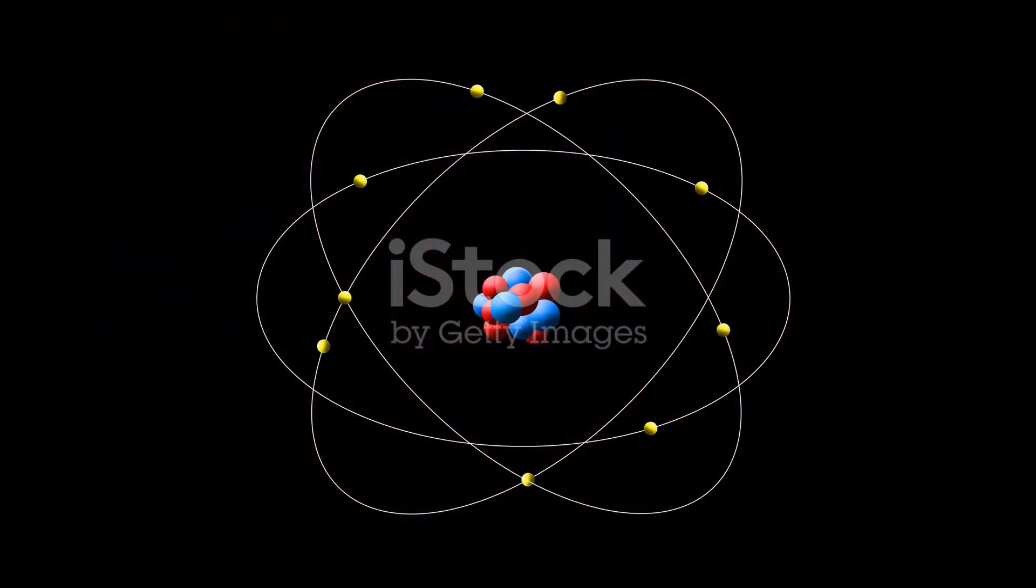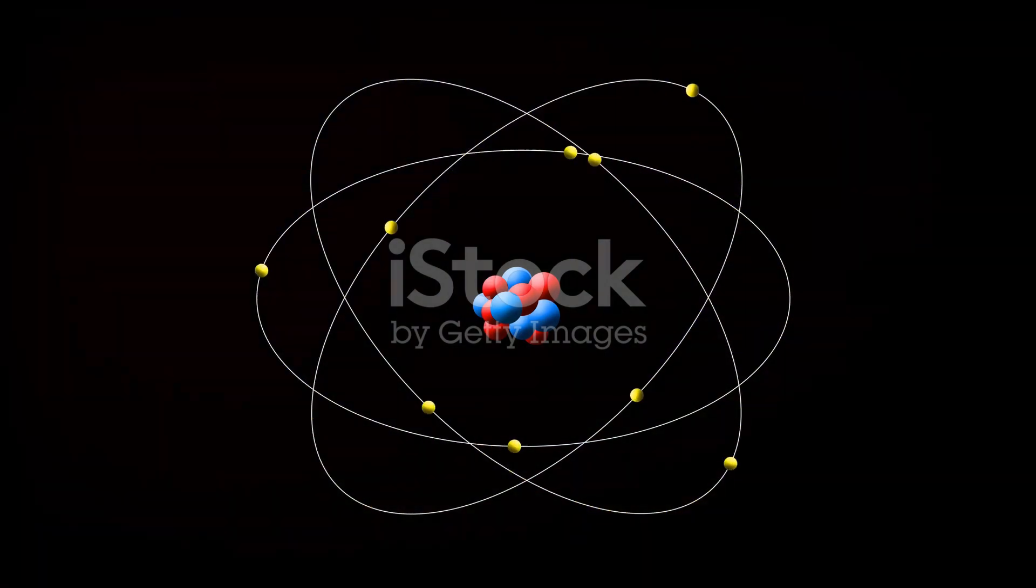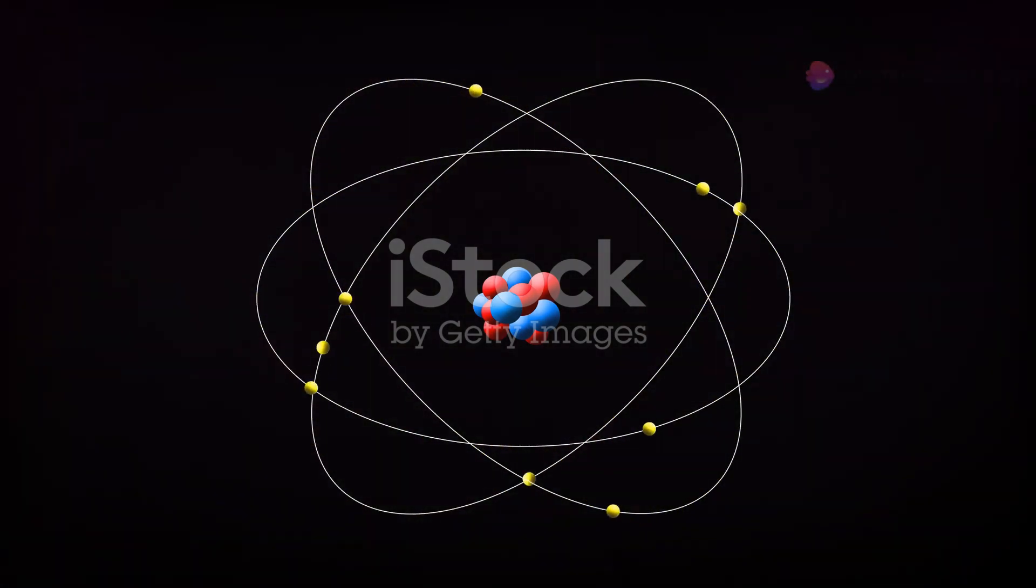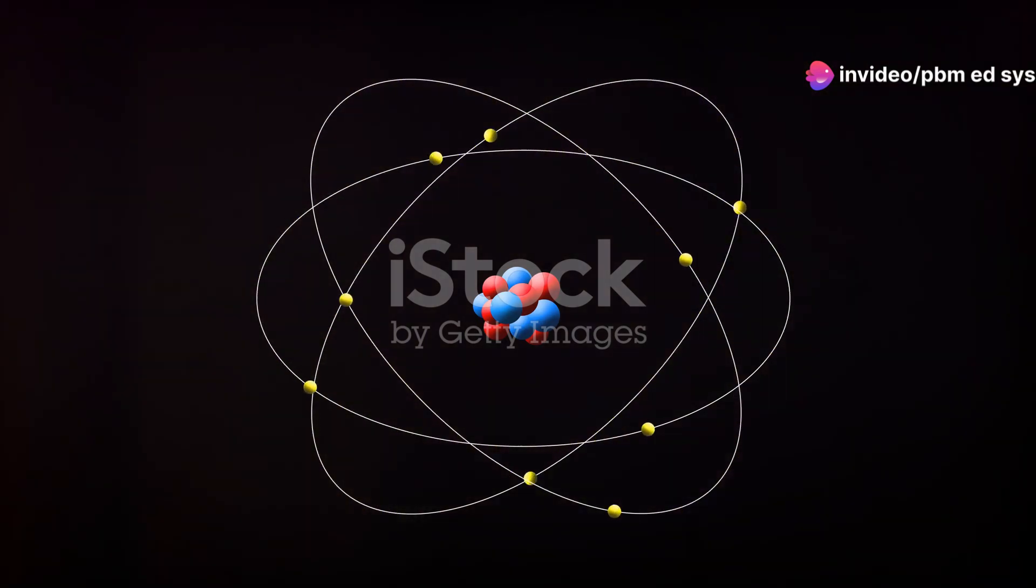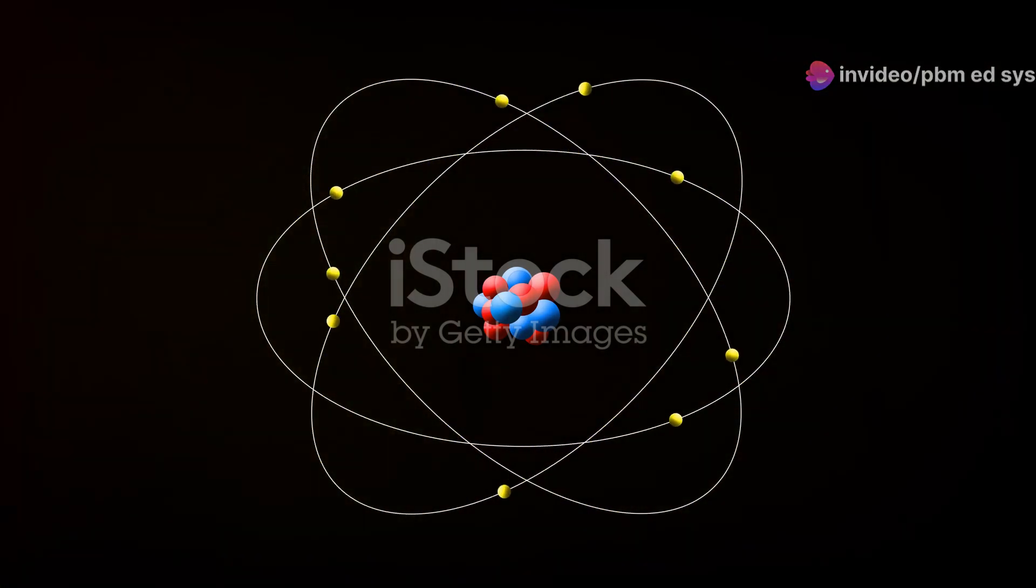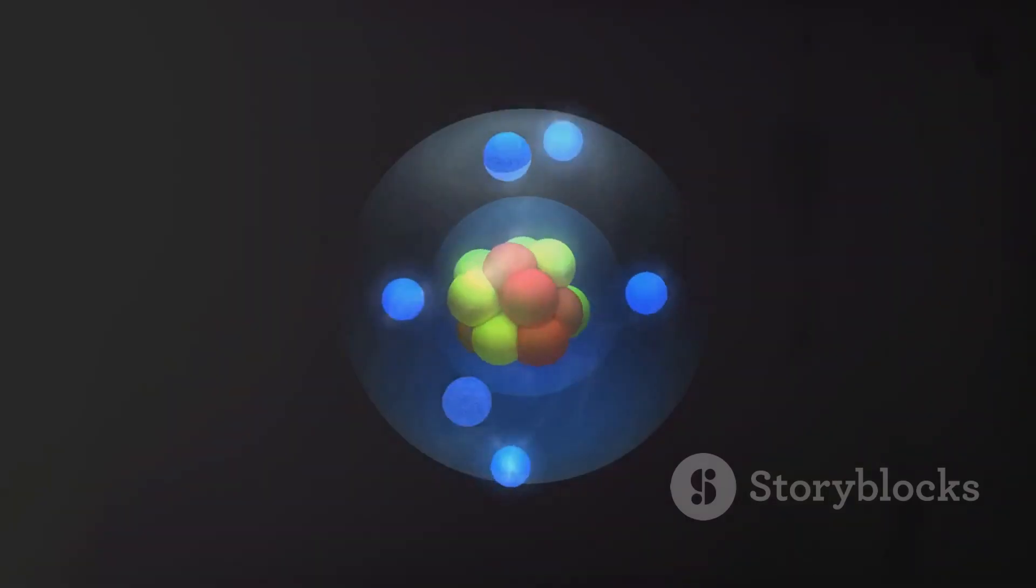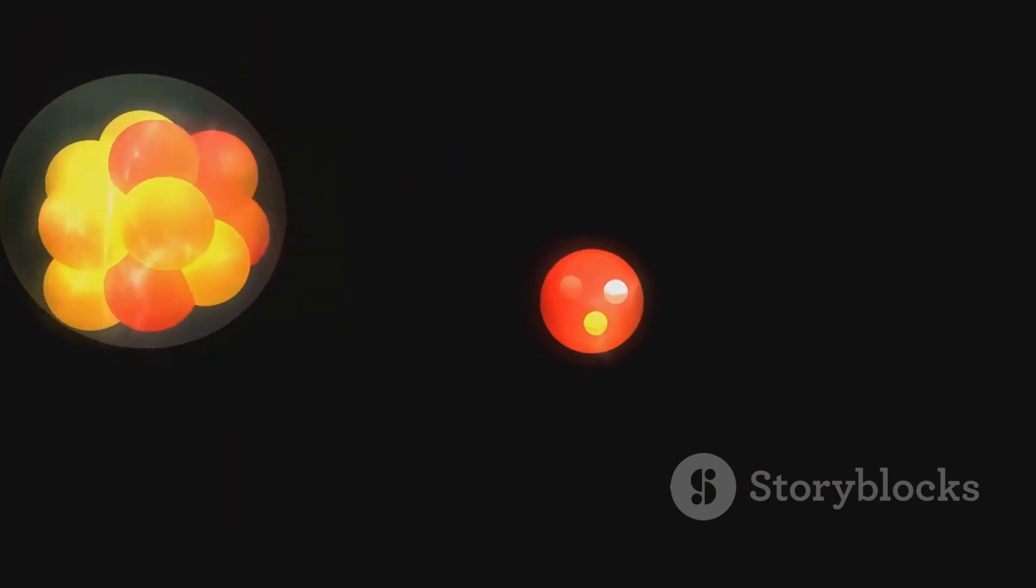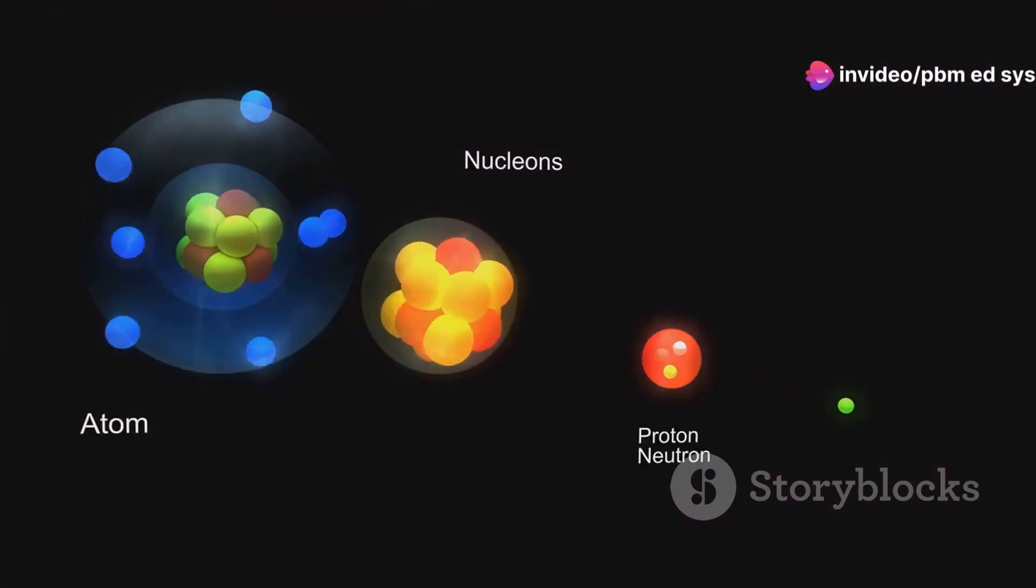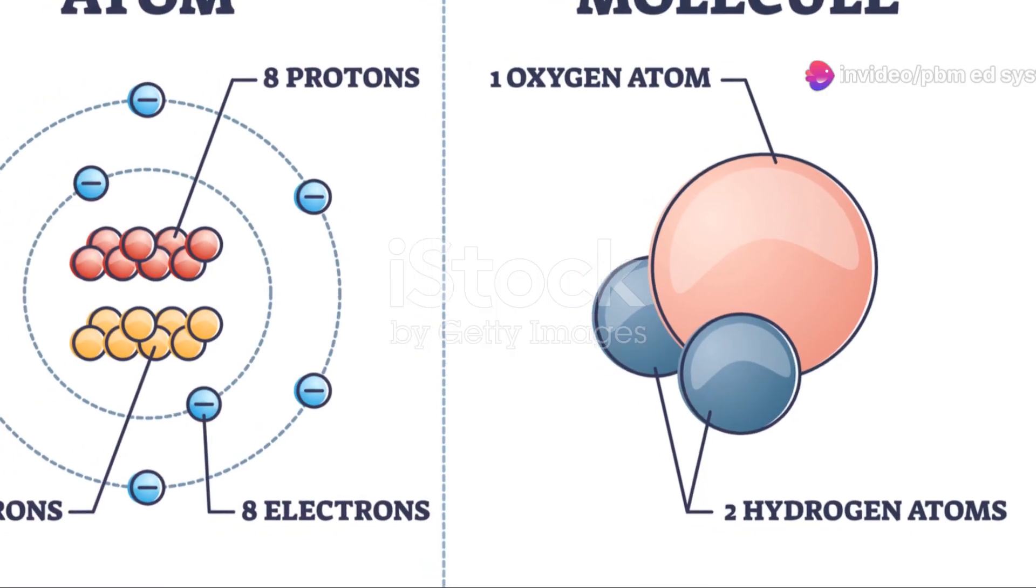At the core of an atom, you'll find the nucleus, a dense hub containing protons and neutrons. Protons are positively charged, while neutrons carry no charge, balancing the nucleus in a delicate dance. Whizzing around the nucleus are electrons, tiny particles with a negative charge. These electrons orbit the nucleus in various layers, or shells, creating a cloud of electric activity around the atom.